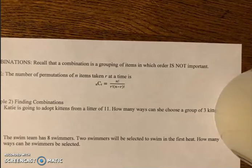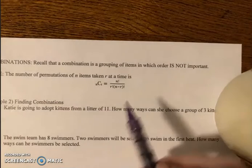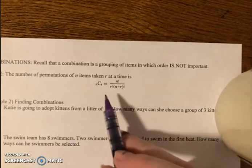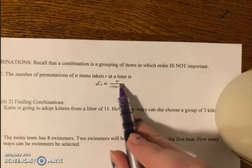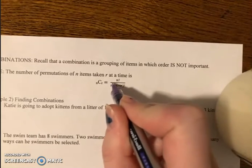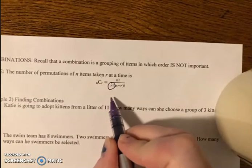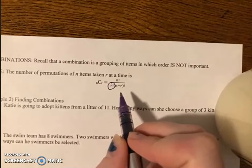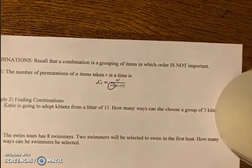So far we've solved permutations, which is n factorial over n minus r factorial. Now we're going to do combinations, which is n factorial over—the only difference is we have r factorial times n minus r factorial. So it's a little bit different, but not very much, and it's very similar to permutations.